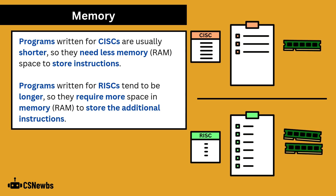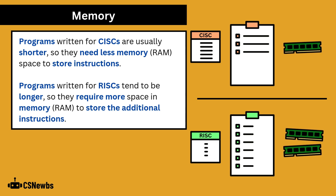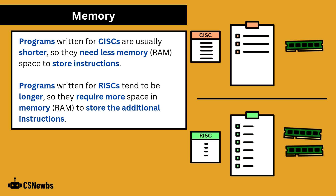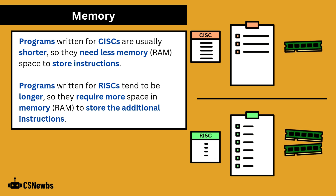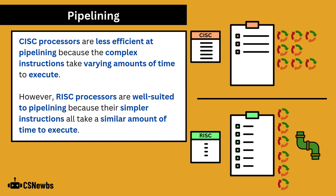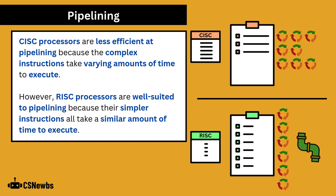Programs written for CISC processors are usually shorter, so they need less memory space to store instructions. Programs written for RISC processors tend to be longer, so they require more space in memory to store the additional instructions. CISC processors are less efficient at pipelining because the complex instructions take varying amounts of time to execute.